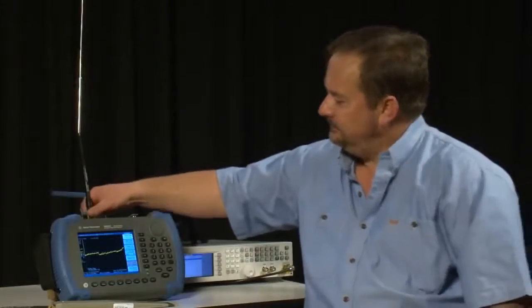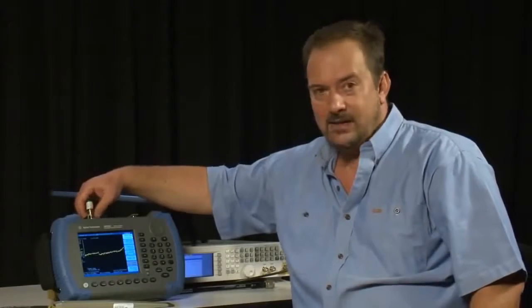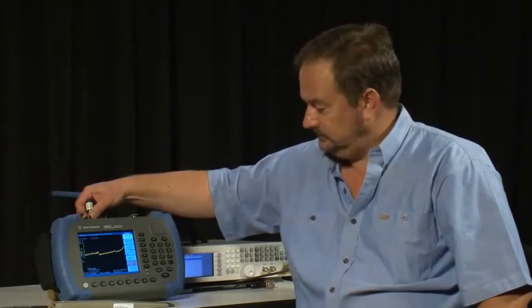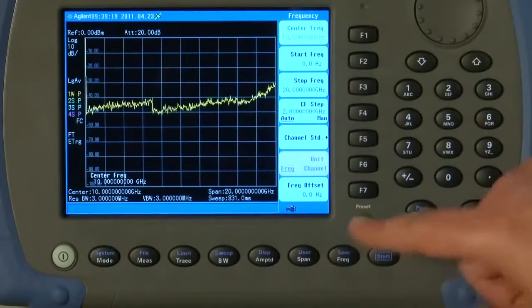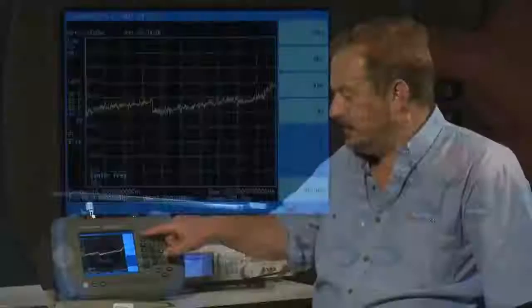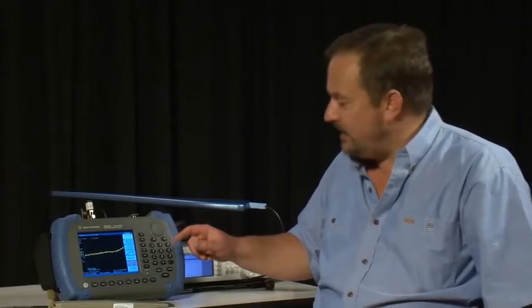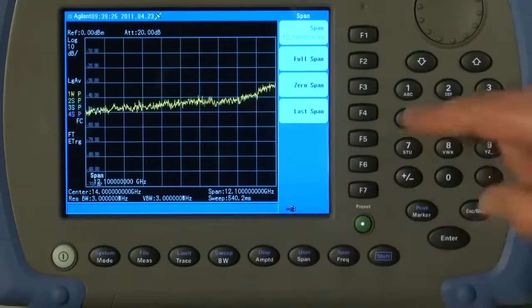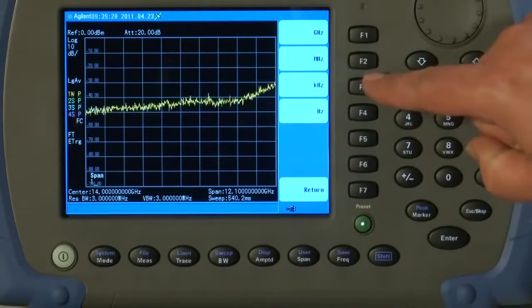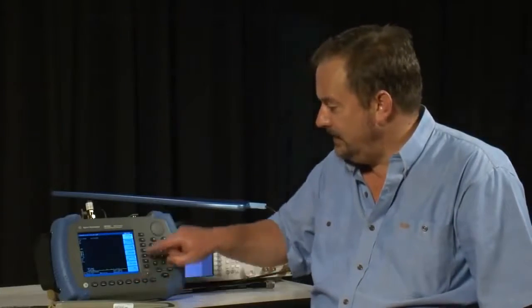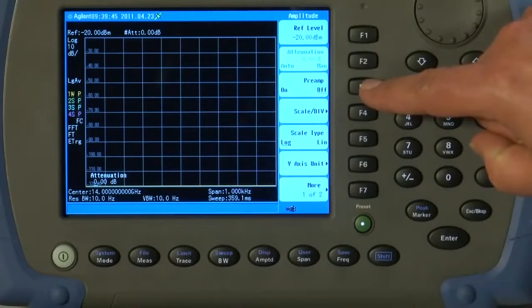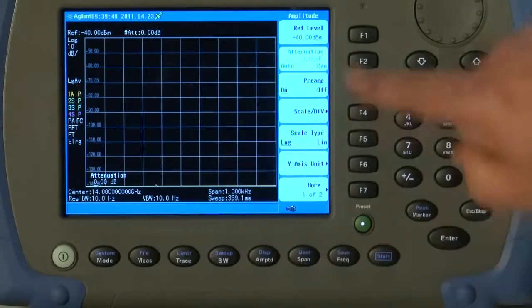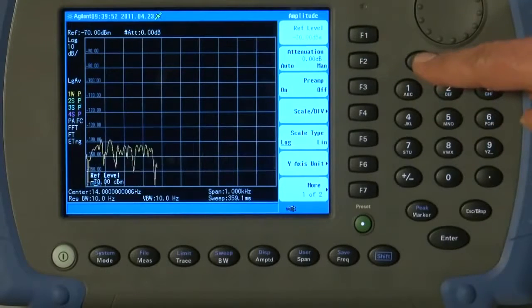So, I will disconnect the antenna and connect a 50 ohm termination to the input. I will press Instrument Preset and select a frequency of, say, 14 GHz, which is a common frequency used in digital microwave links. I will set a span of 1 kHz, and let us press the Amplitude button. We will set the attenuation to 0 dB, turn the pre-amplifier on, and adjust the reference level to bring the trace back up onto the screen.